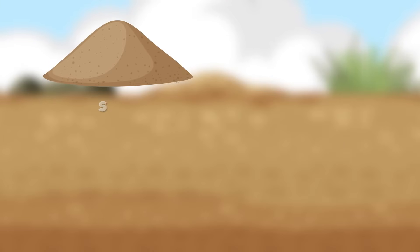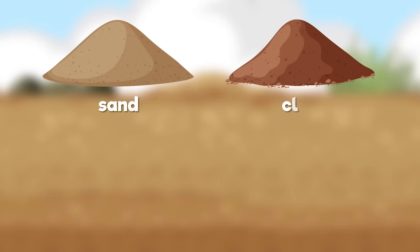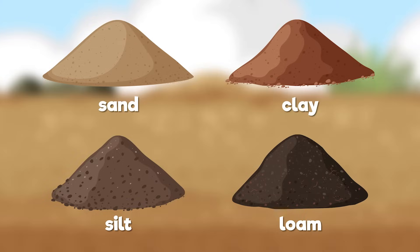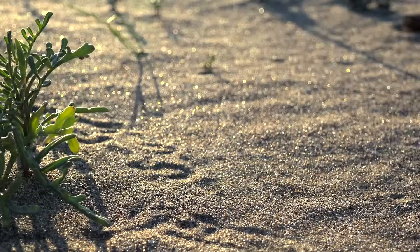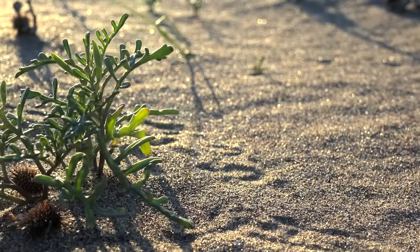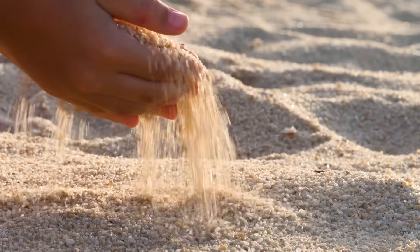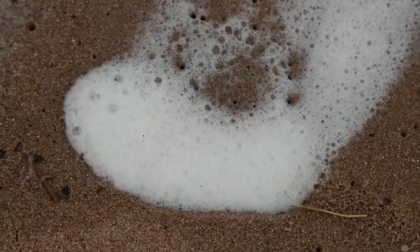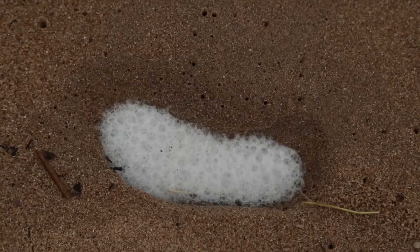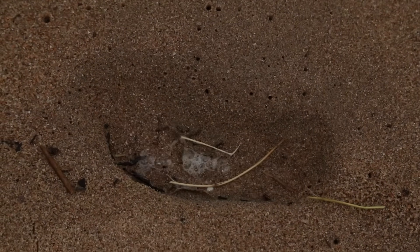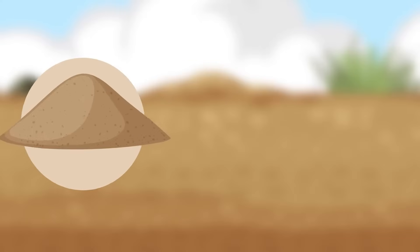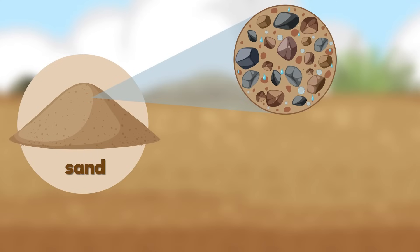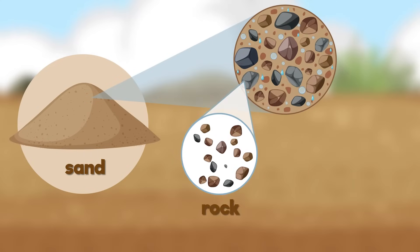In making close observations, we can see that the composition of each soil type is different. To finish up, let's take a look at the general composition of each soil type. Sand has big particles, like the sand you find at the beach. These big particles mean that sand can't hold onto water very well, because the water just drains right through. This is why sand is often dry. But the big spaces between the particles do allow a lot of air to move through. Sand does not contain much humus.